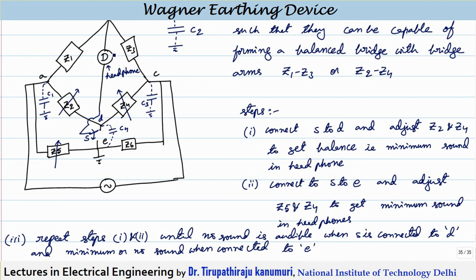When the switch is changed from point D to point E, the headphone will start giving sound again. Now adjust the value of Z5 and Z4 to get the minimum sound in the headphones. Once the minimum possible sound is obtained with switch at E, turn the switch back to D — because as you varied Z4, the balance will be disturbed again. So again adjust Z2 and Z4 to get balance, then switch to E again and vary Z5 and Z4 to get balance.